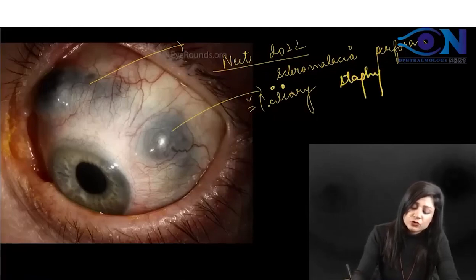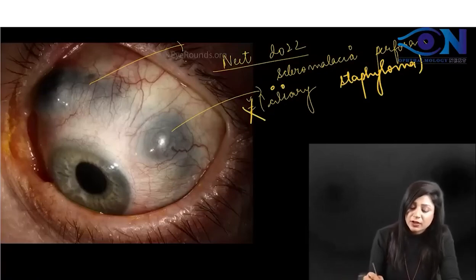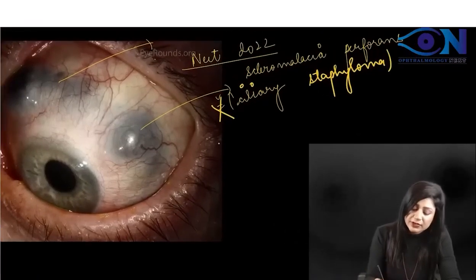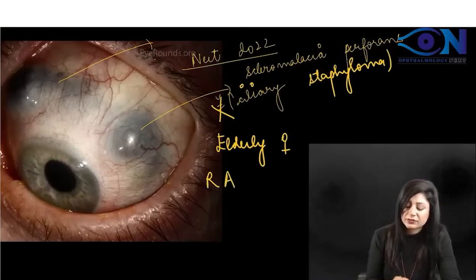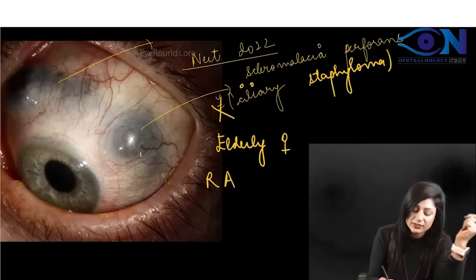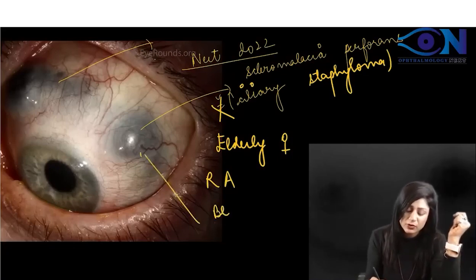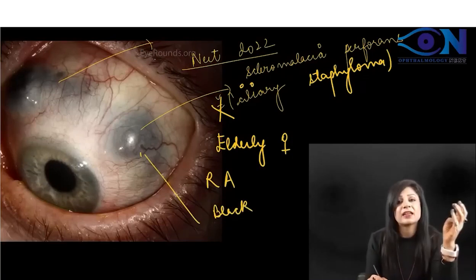This is not ciliary staphyloma. Usually they will give you a history that this is found in elderly females along with rheumatoid arthritis. Plus you can see more than one blackish area - if you see multiple black areas, this is diagnostic.